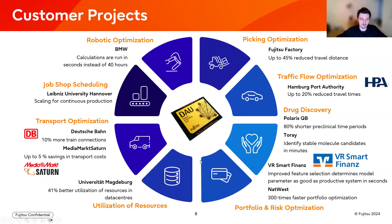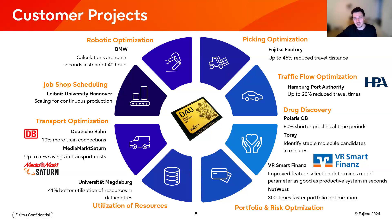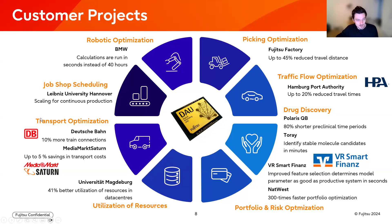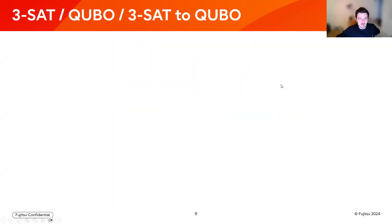Just as a reminder: we at Fujitsu have a scientific background, but right now we are focused on working with customers and using this technology to solve real-world combinatorial optimization problems. Here is a brief overview of some projects we did together with customers across various industries — optimization of transport for Deutsche Bahn, scheduling problems, drug discovery, financial optimization, and more.